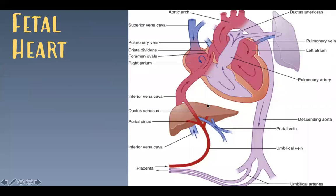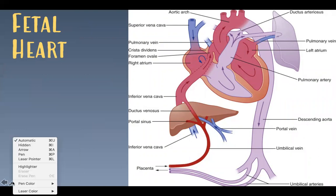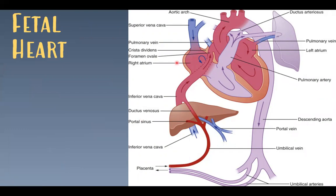Looking at the fetal heart, blood coming from both the superior and inferior vena cavae enters the right atrium. The inferior vena cava blood, which has slightly higher oxygen content, flows through the crista dividens and through the foramen ovale into the left atrium. The remainder from the superior vena cava goes through the tricuspid valve into the right ventricle, into the pulmonary artery, and then through the ductus arteriosus directly into the descending aorta.